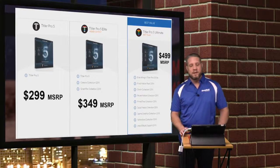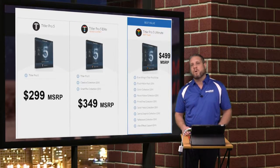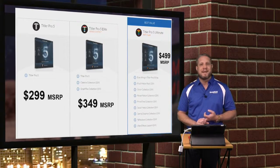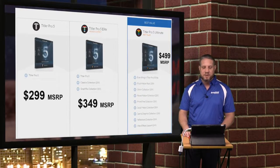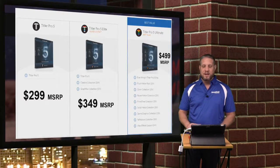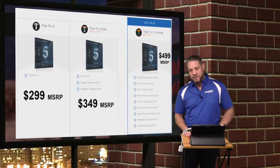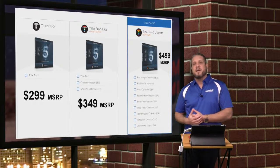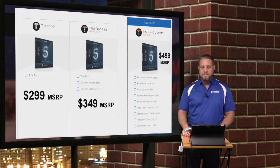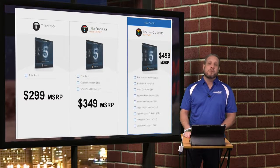Titler Pro 5 is available in three versions. There is the Standard version — the titling tool itself — at a $299 MSRP, which is a great value for anyone using Adobe software, Avid Media Composer, Grass Valley EDIUS, DaVinci Resolve, or any other compatible application. Next, there is Titler Pro 5 Elite at $349 MSRP — for $50 more, you're getting $100 in value with the Classics Collection and the Draft Packs Collection. The best value is Titler Pro 5 Ultimate at $499 MSRP, which includes all the different collections, plugins, looks, and titling presets. Full details are available on our website at broadfield.com and on NewBlue's website at newblueeffects.com.